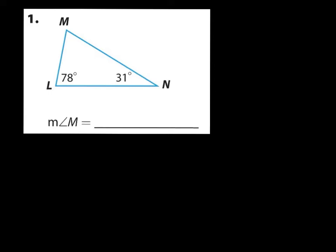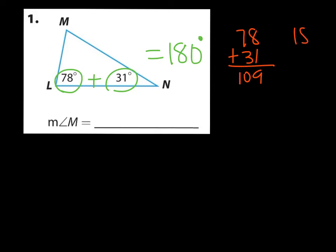If you remember from the last page, we said that the whole entire triangle would be 180 degrees no matter what. So if I know these two given angles, I can add them together and then subtract it from the total. So 78 plus 31 is 109, and then I would simply subtract that from 180 and that should be 71.